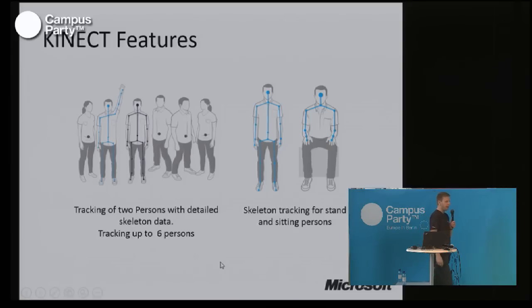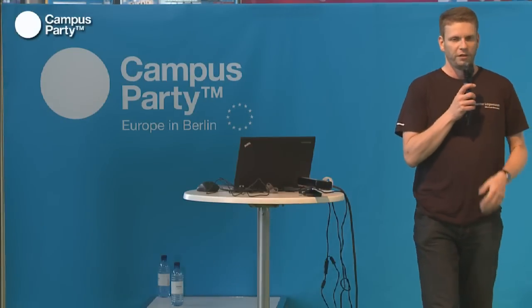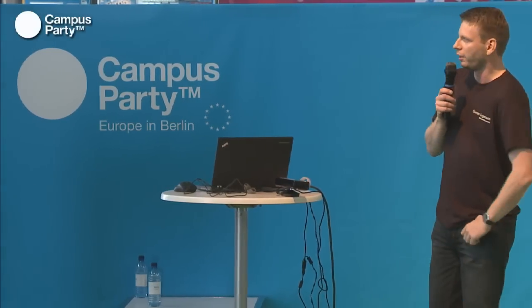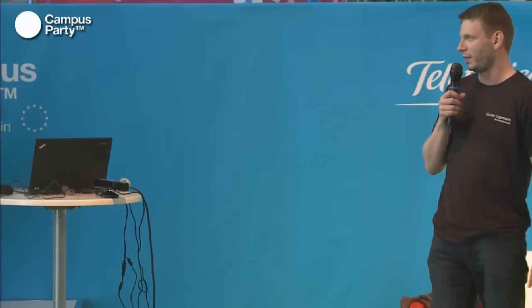Most importantly, this is where the Kinect is really optimized: skeleton detection. We are able to detect two skeletons in full detail, but we are able to track up to six persons. For two players we get the exact position of every joint in the skeleton, but we also know that there are probably another four people in the picture — we can track them and differentiate them.